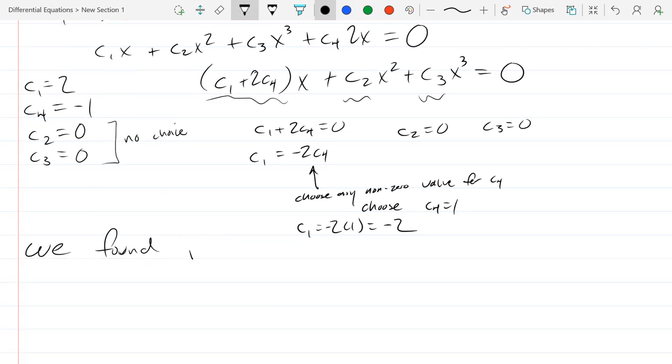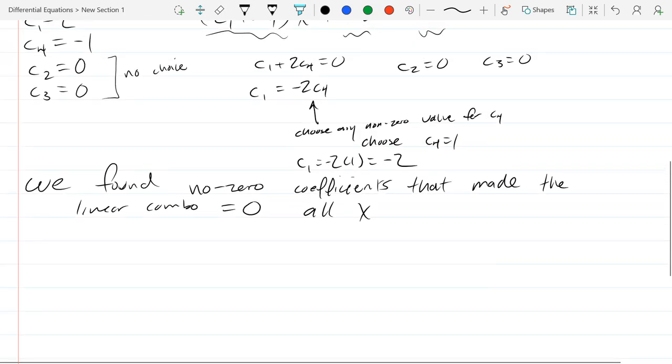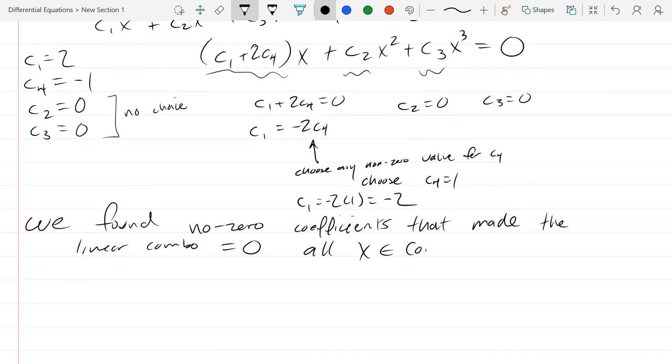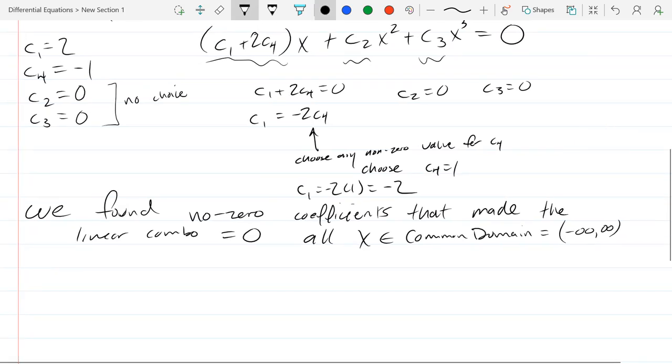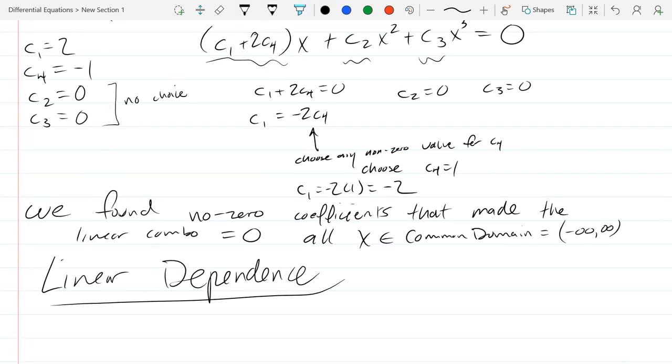I think the obvious one to choose is 1. So c1 is negative 2 times 1, which is negative 2. So that's almost what we got at the beginning when we were guessing. So we found non-zero coefficients that made it 0. So this is linear dependence. We made the linear combination equal to 0 for all x in the common domain. Common domain happened to be negative infinity to infinity. So the first one is dependent.